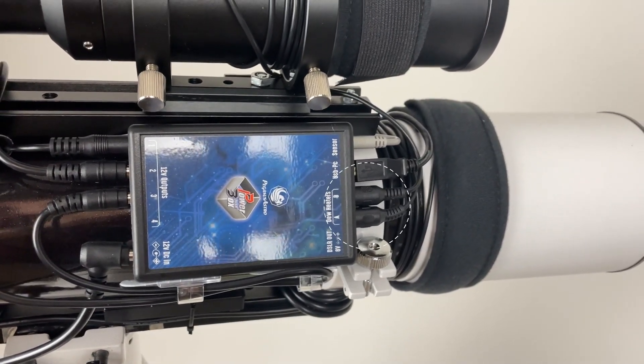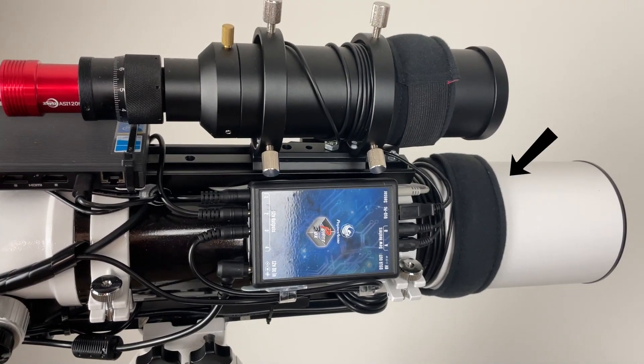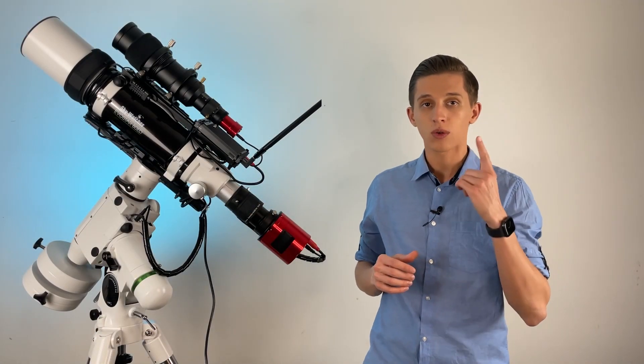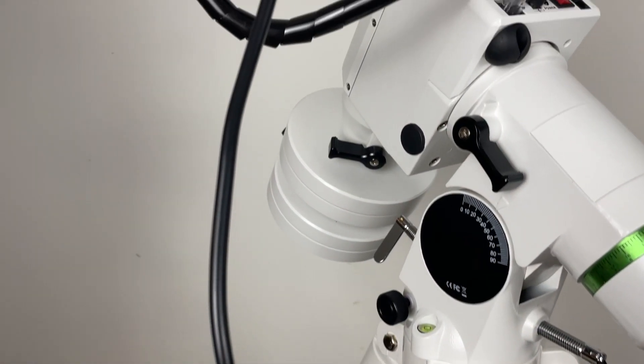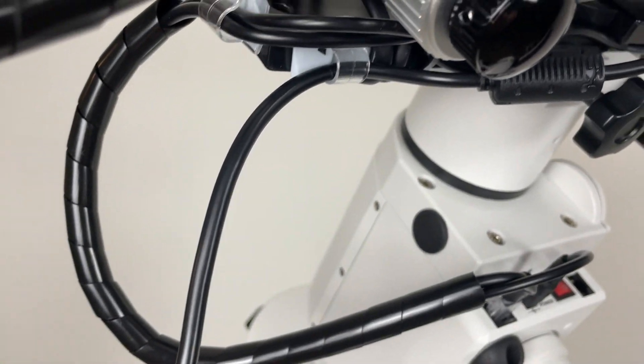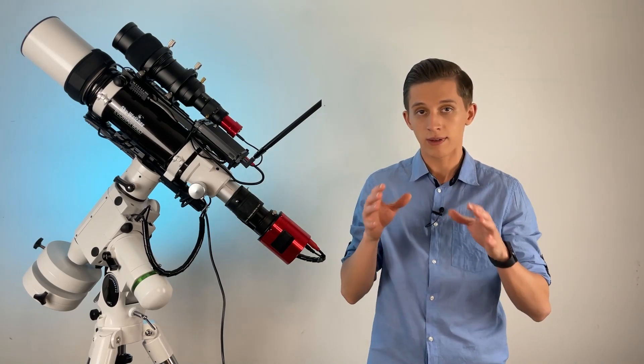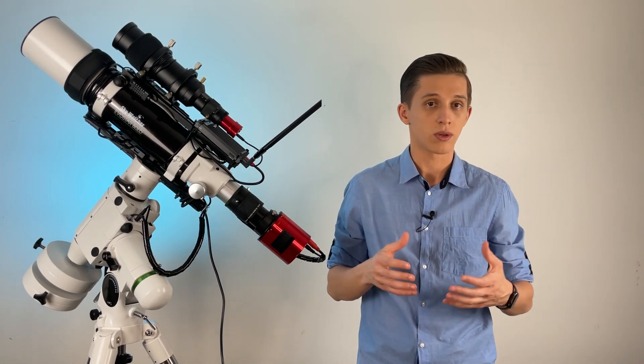Also, it has two ports to connect dew heaters and I have two of them for imaging telescope and the guide scope. And with this setup, I have just one cord running from the ground to the telescope. And this is a power cord for the Pegasus Astro Pocket Power Box. As a result, Power Box provides power to all devices, including the mini PC, that meanwhile controls all devices.